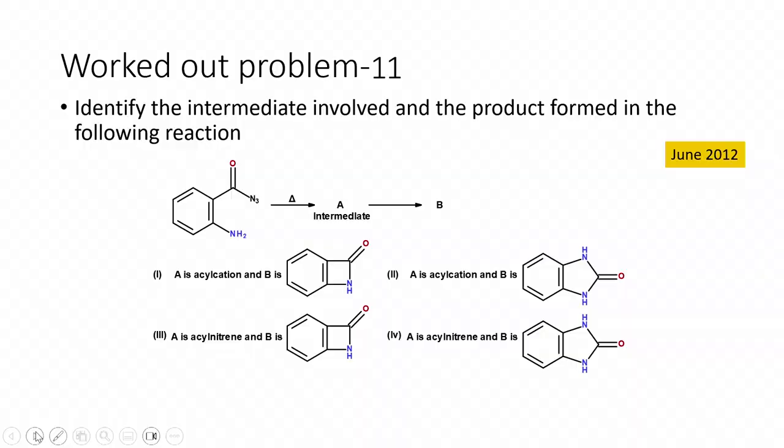Let us move on to the next problem. Identify the intermediate involved and the product formed in the following reaction. We have an acyl azide and this is heated. It gives an intermediate A and that undergoes some reaction to give B.